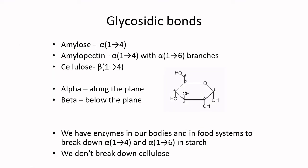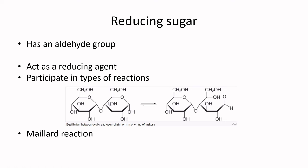Glycosidic bonds are important to note: alpha implies it's along the plane, making polymers that lie flat; beta implies it's below the plane, stacking one on top of another. Cellulose is a polymer with beta-1,4 glycosidic bonds. We don't have enzymes in our guts to break down beta-1,4 bonds, so we really can't break down cellulose. Cellulose therefore becomes what we call dietary fiber — it implies we can't digest it and therefore we excrete it in our feces.